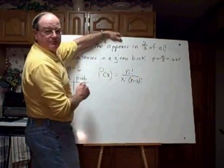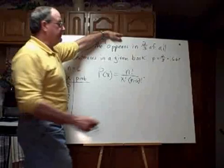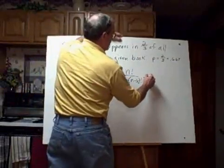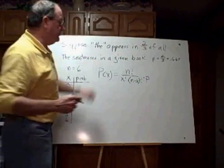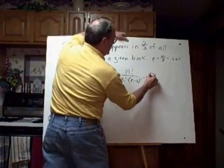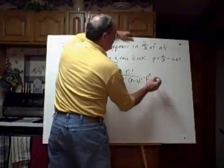Now, that's the fraction part. The rest of it says we're going to multiply this times my probability of success, P, but P is going to be raised to a power. The power it's raised to is the X power, the power of the number of successes. Then we also multiply times the probability of failure...